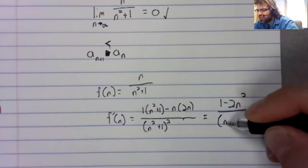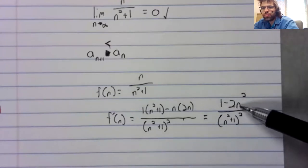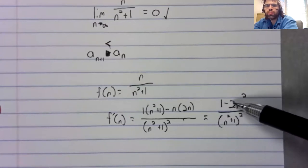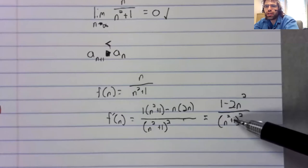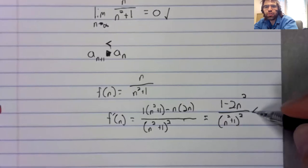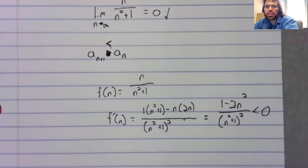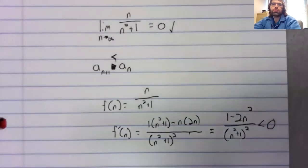And is this negative? Yeah, when n is one, this numerator is negative, and then as n increases this just gets smaller and smaller. So it starts negative and it stays negative. A negative number divided by a positive number. This is positive because it's a square. This derivative is negative, so this is decreasing. So these terms are decreasing.